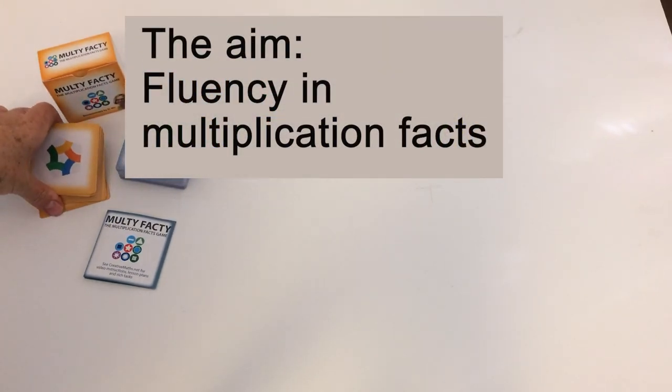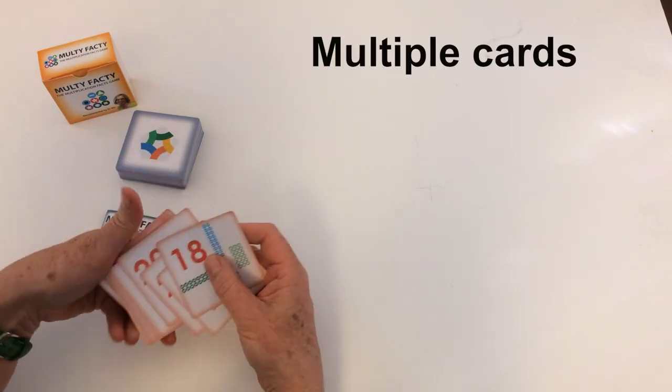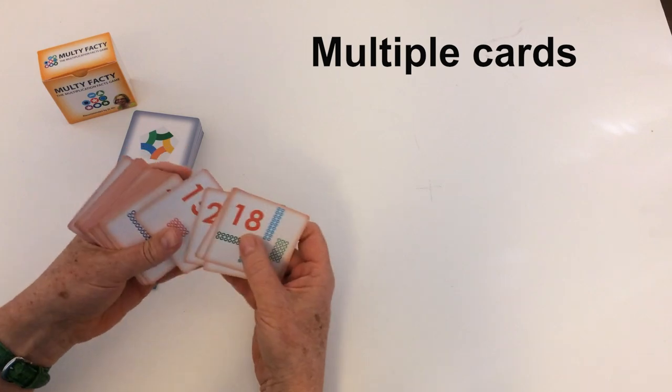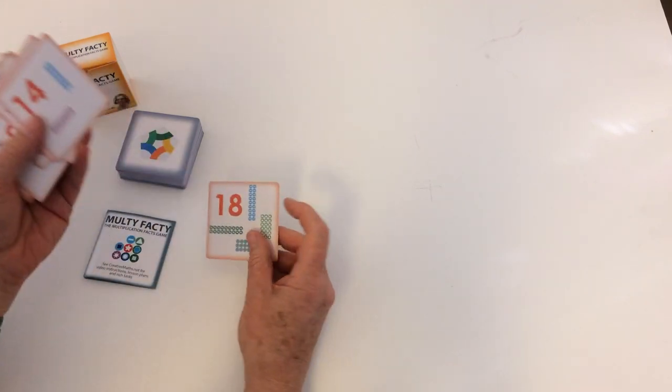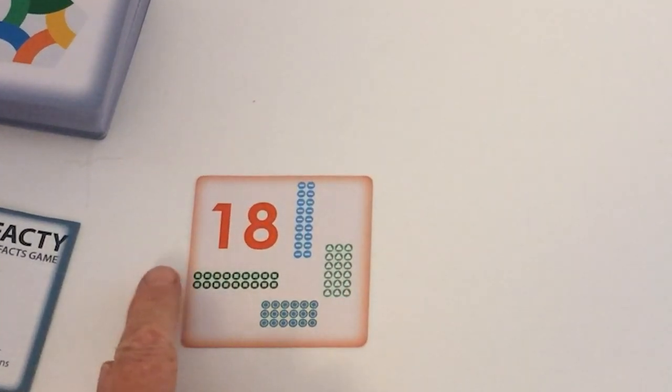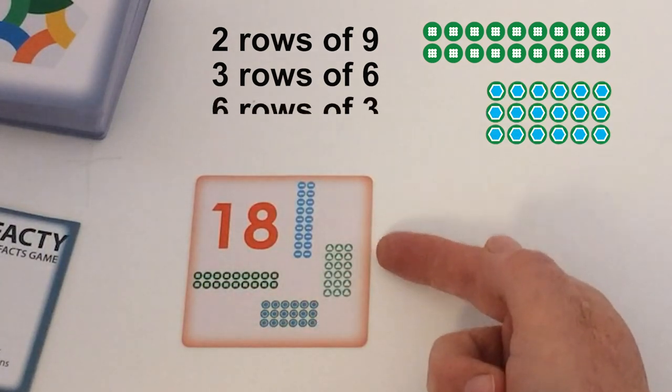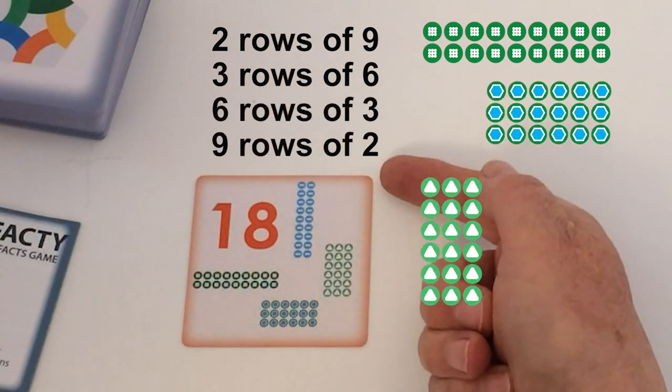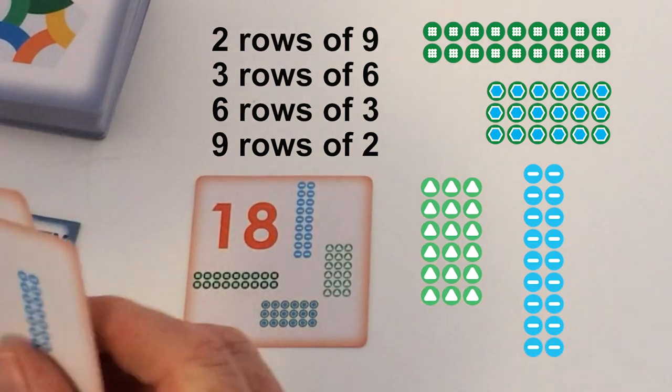So first of all I'll introduce the cards. These are the multiple cards and there are 31 of them because there are 31 multiplication facts that people need to learn. Let's take a look at 18 here. You can see that 18 has two rows of nine, three rows of six, six rows of three, and nine rows of two. So those are the different ways that you can get 18.